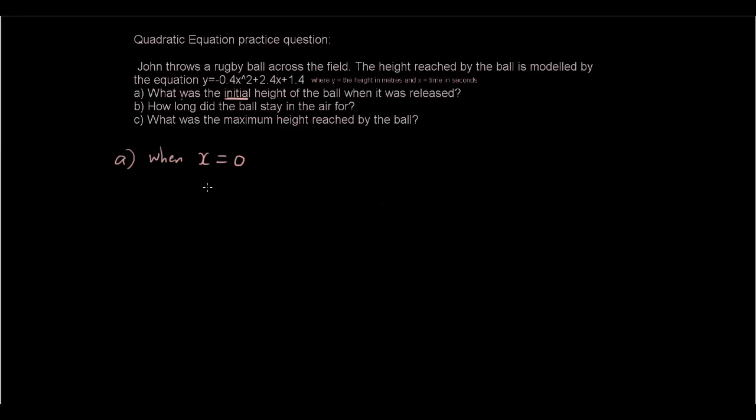So when x is equal to 0, y equals negative 0.4 times 0 squared plus 2.4 times 0 plus 1.4. So y is just equal to 1.4 meters. So that is the initial height of the ball when it was released.